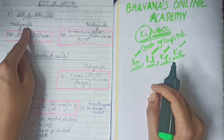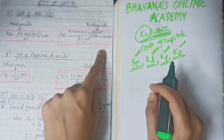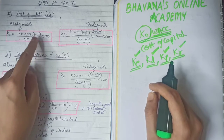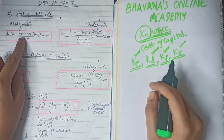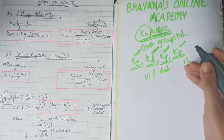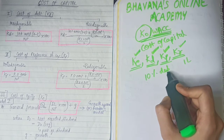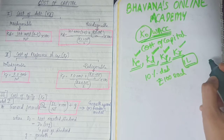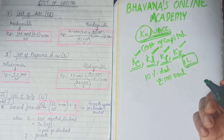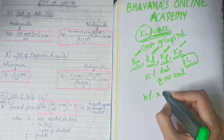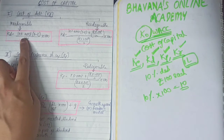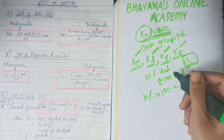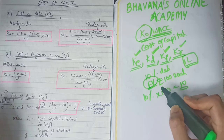For irredeemable debt, the formula for cost of debt is: KD = (Interest Amount × (1 − T)) / Net Proceeds × 100. The interest amount is found per share on face value. For example, if you have 10% debentures of ₹100 each, the interest amount is 10% of ₹100, which is ₹10.